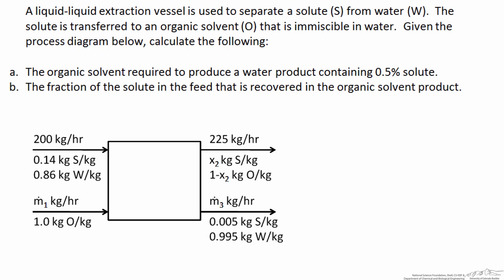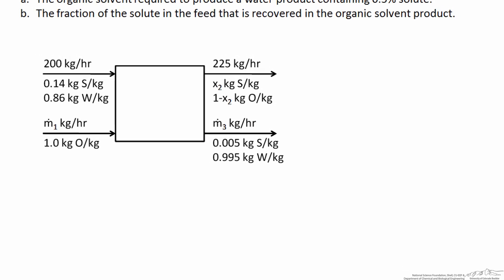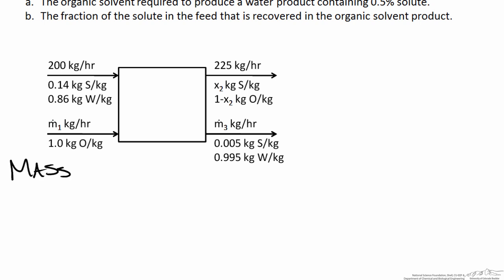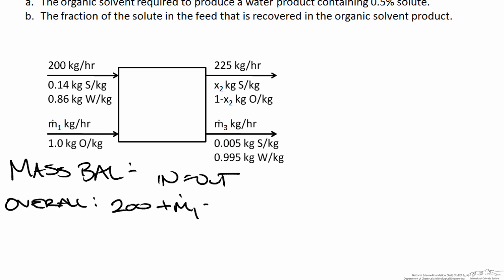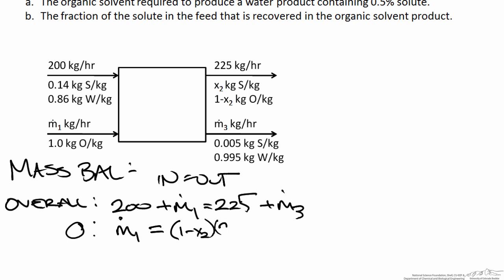To calculate the two things asked for in this problem, we can relate the process variables with material balances. The principle of the mass balance is conservation of mass — what goes in must come out — so all of our mass balances have the form in equals out. The overall mass balance: 200 kg/hr in the feed plus the unknown M1 must equal 225 in the extract plus M3 in the raffinate. Since the overall balance has two unknowns, we need a species balance. Using the organic solvent balance: M1 equals (1 minus x2) times 225.